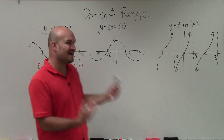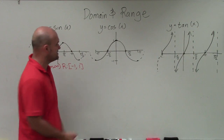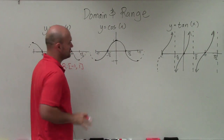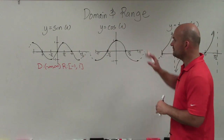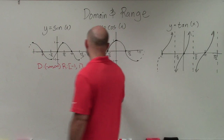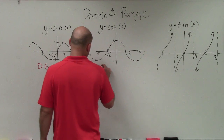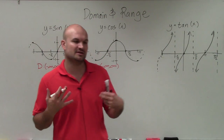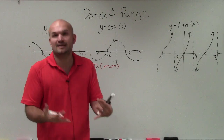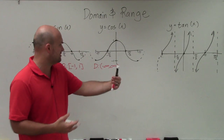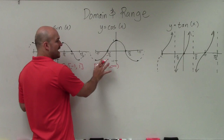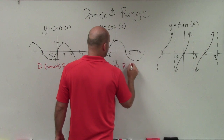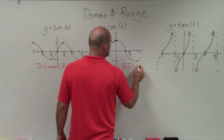Now looking at the cosine graph — I didn't graph multiple periods just for space purposes, but you can see these graphs continue on and on. Just like sine, the domain continues indefinitely to the right and left, so the domain is from negative infinity to infinity — an open interval, because infinity is not an actual number. However, the range again does not go above 1 or below negative 1, so the range is a closed interval from negative 1 to positive 1.